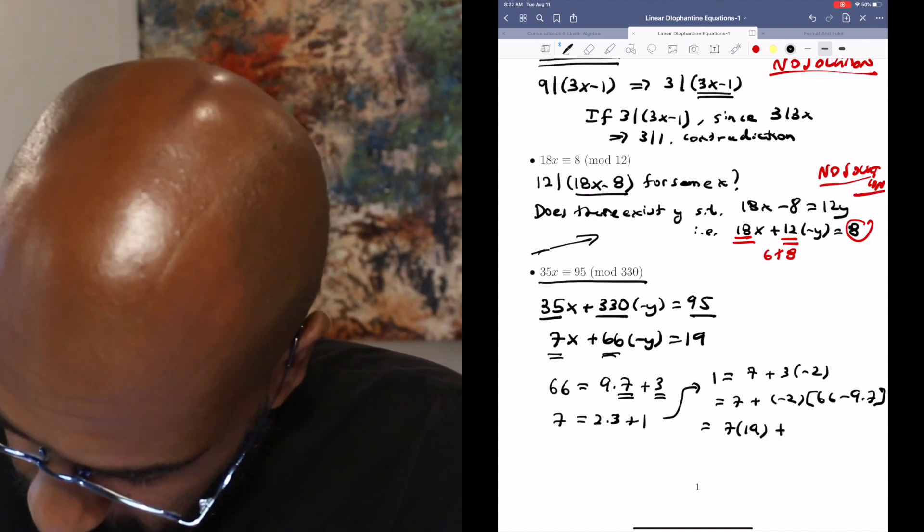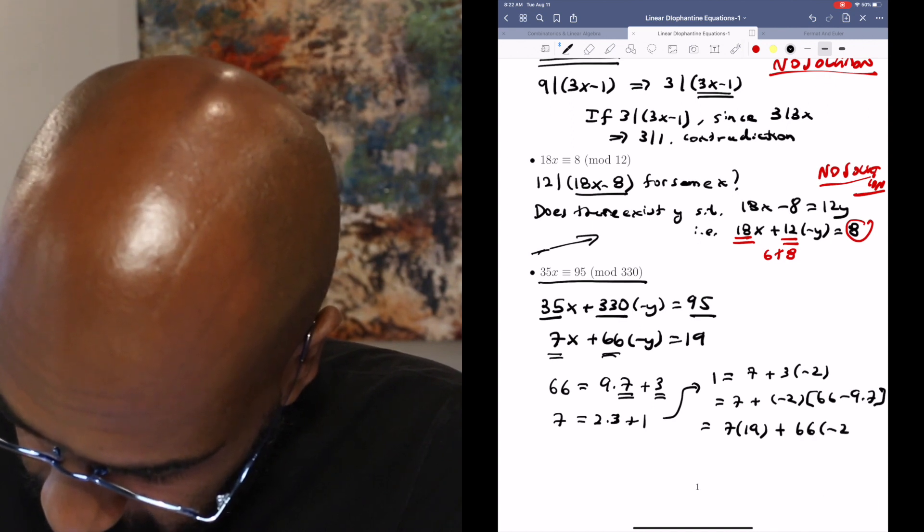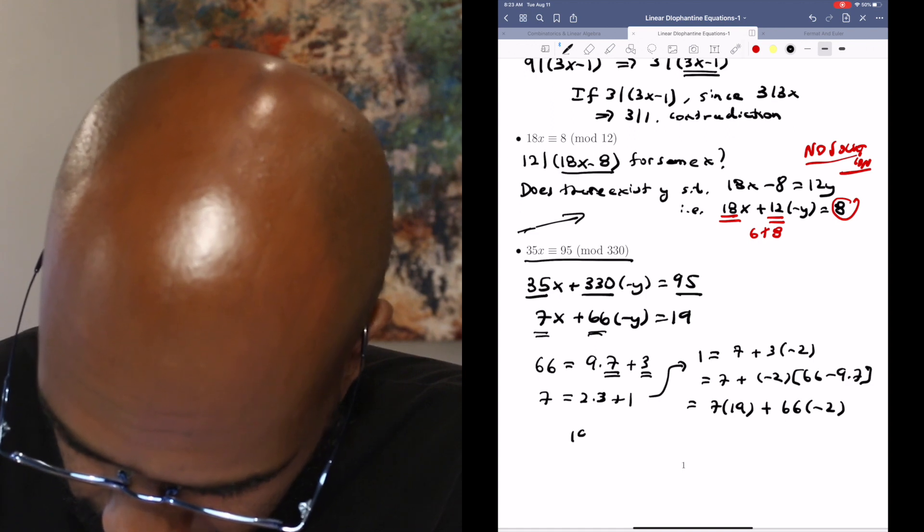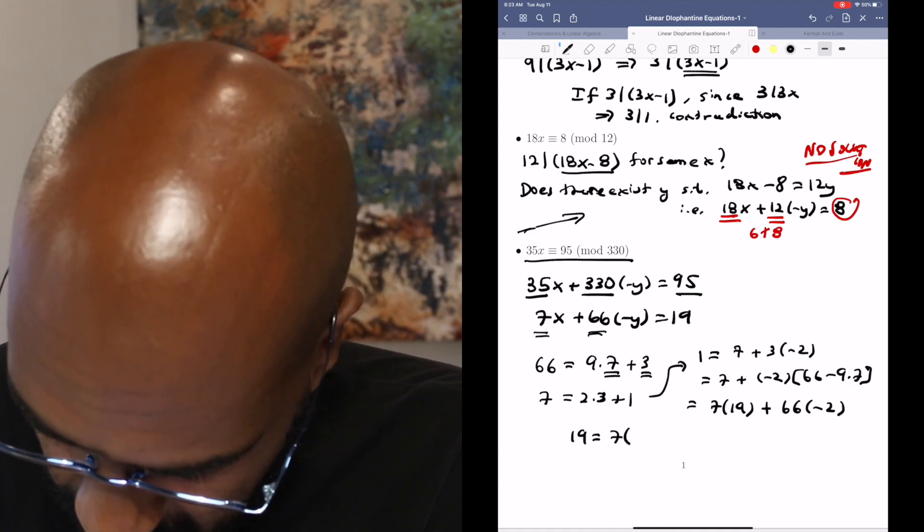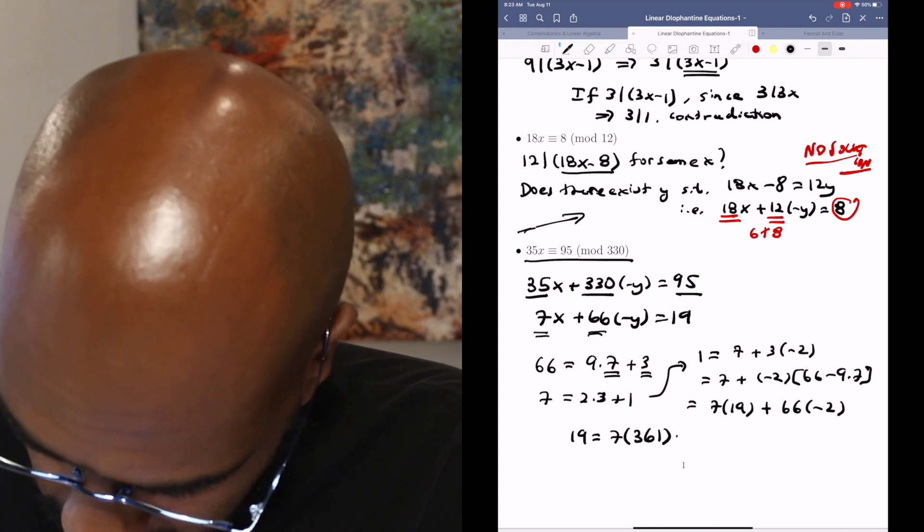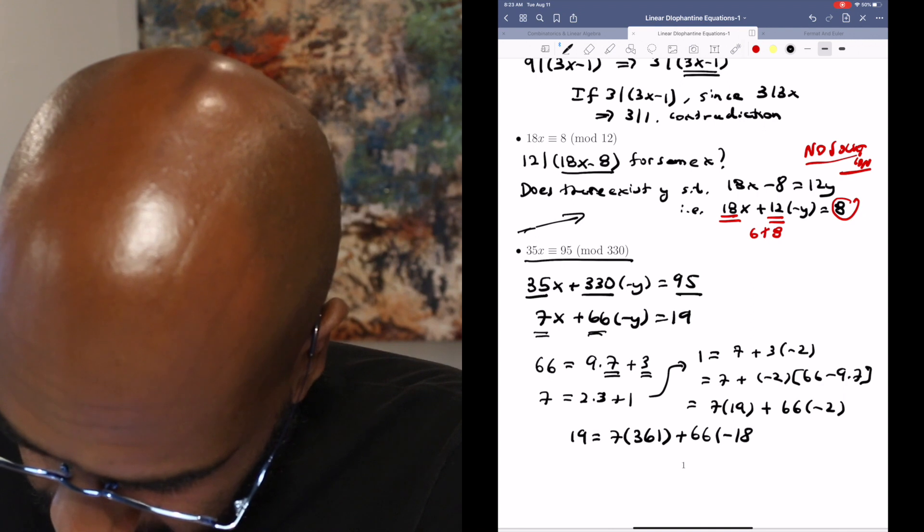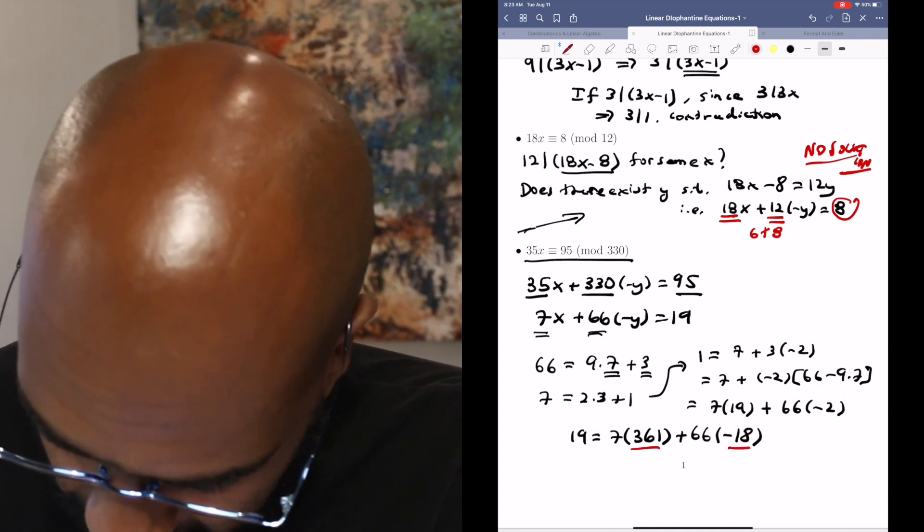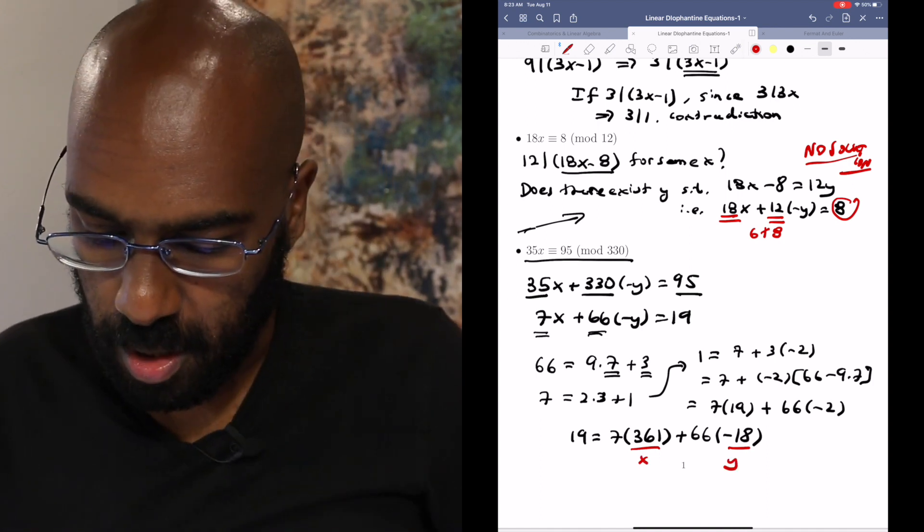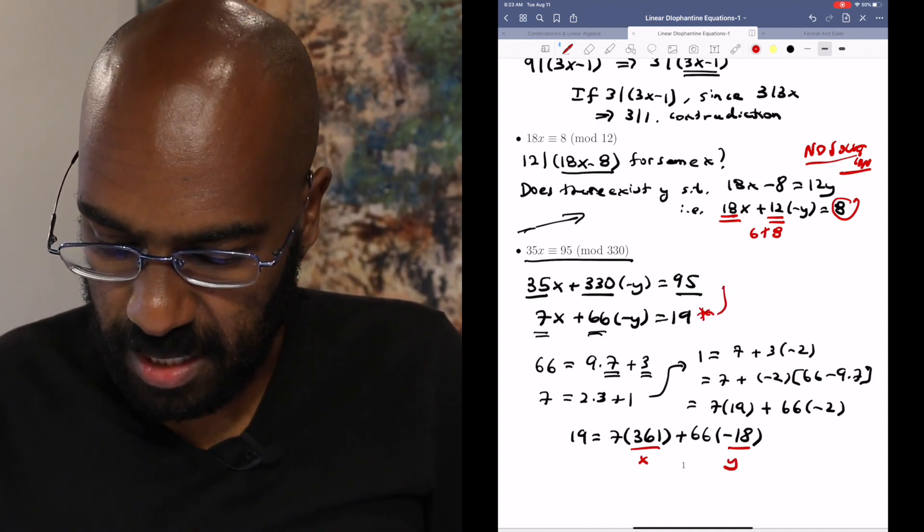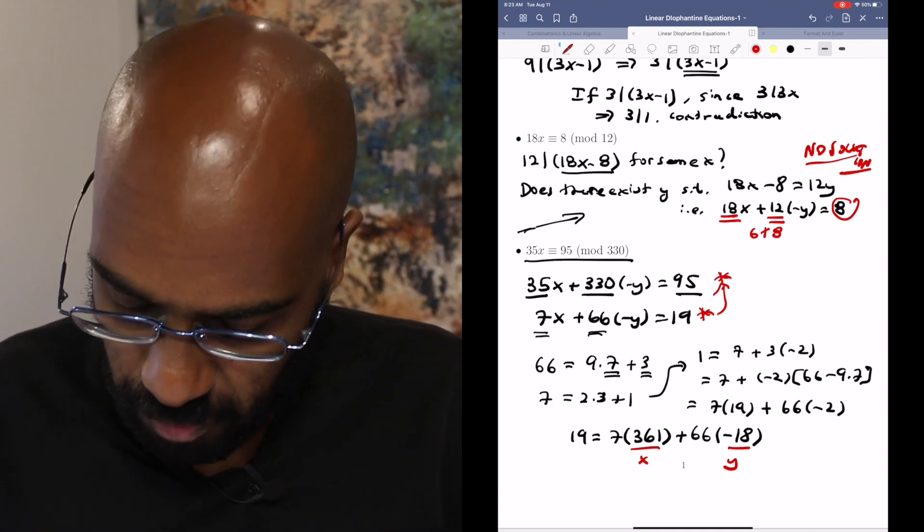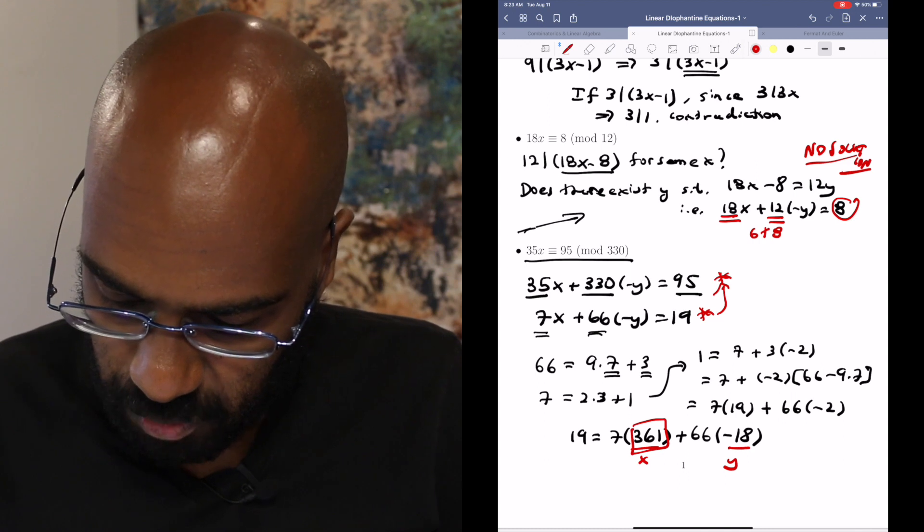And negative 2 copies of 66. So then 19 is 7 times 19 times 19, which is 361 plus 66 times 19, which is negative 18. So here we have two values for x and y that actually work in our equation right over here, which then means they work in this equation right over here. And so a value of x that works for our congruence is 361.